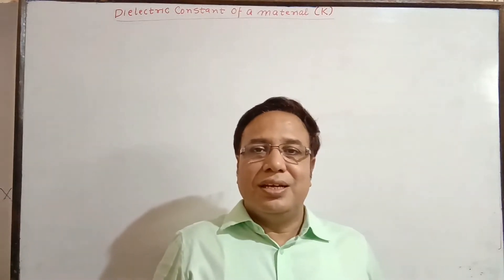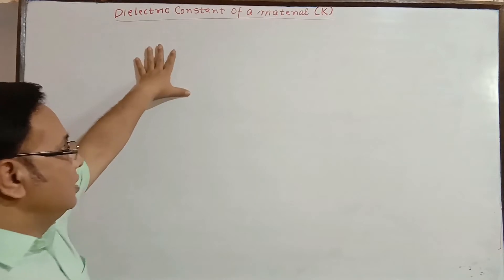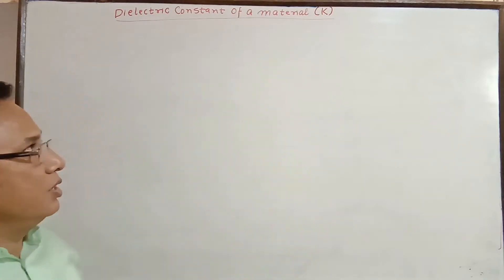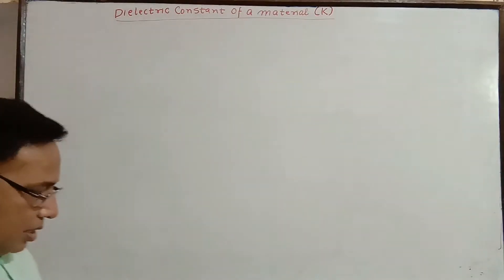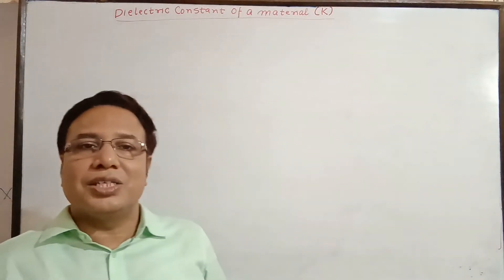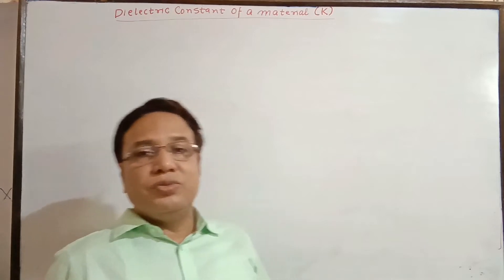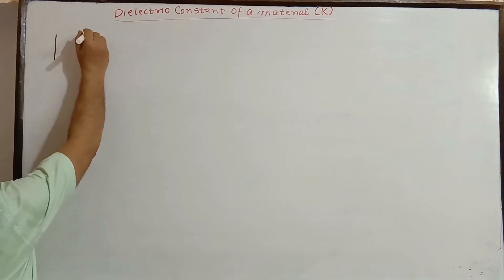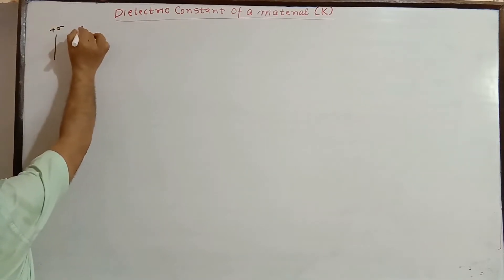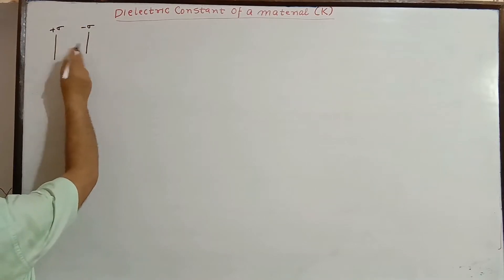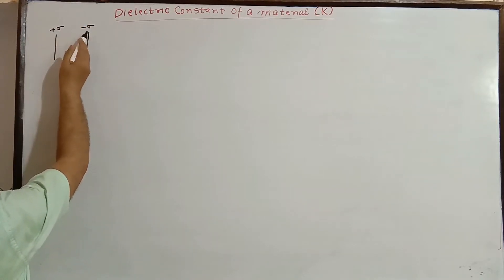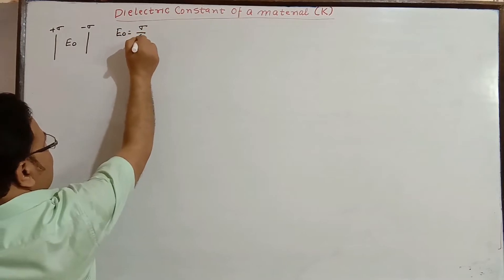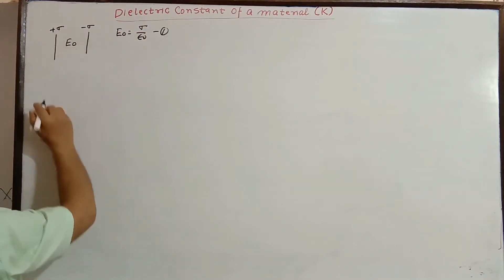Good morning students. We are going to start the new topic: dielectric constant of a material, symbol k. Let us start with a recap from the last video on the reduced value of electric field. We had seen the electric field between two charged sheets having charge density plus sigma and minus sigma. The electric field in vacuum was E₀ = σ/ε₀.